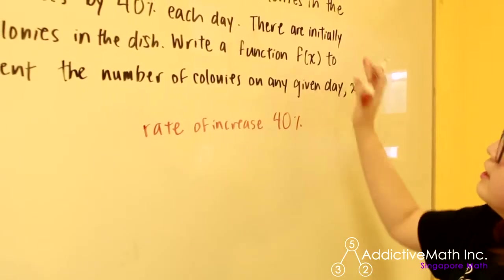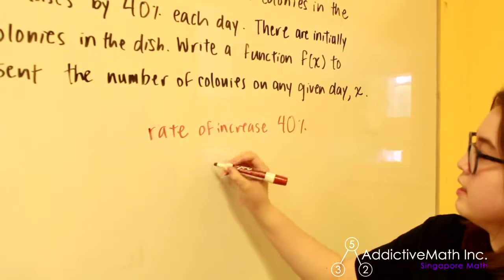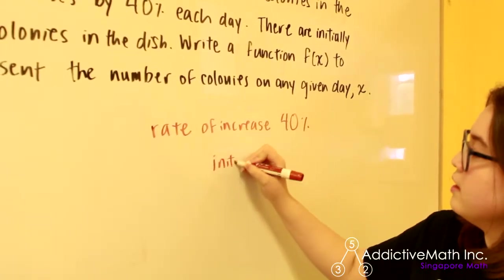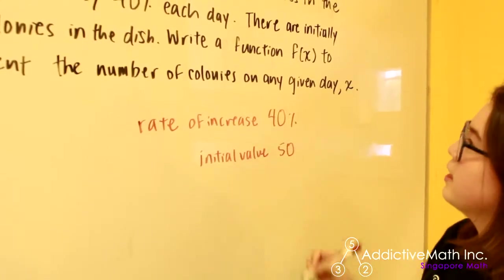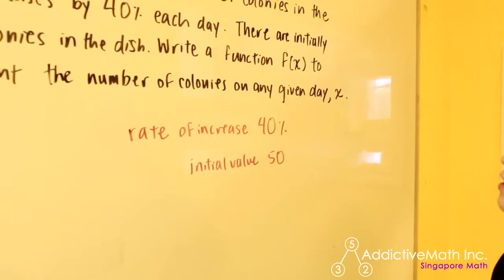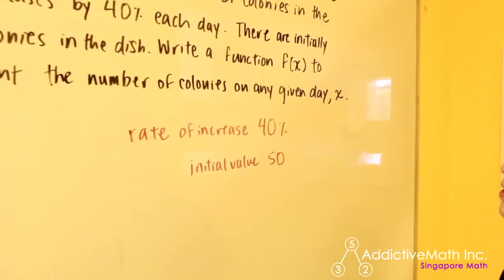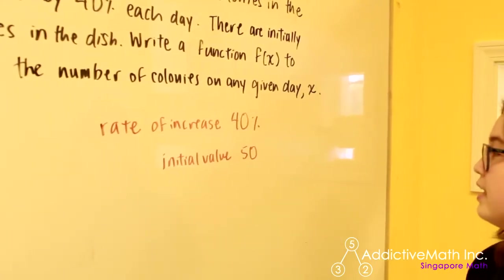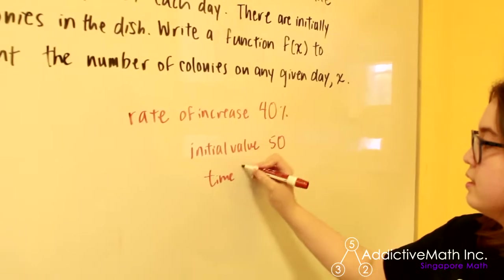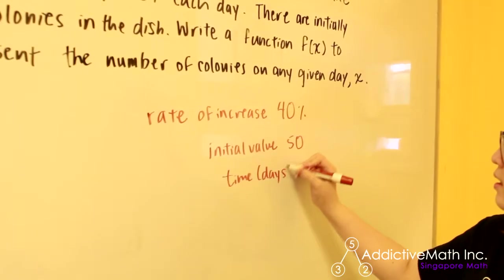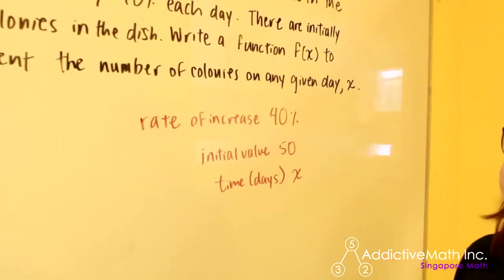There are initially 50 colonies in the dish. So our initial value is 50. And they want us to write a function f(x) to represent the number of colonies on any given day x. So our time in days is represented using the variable x.